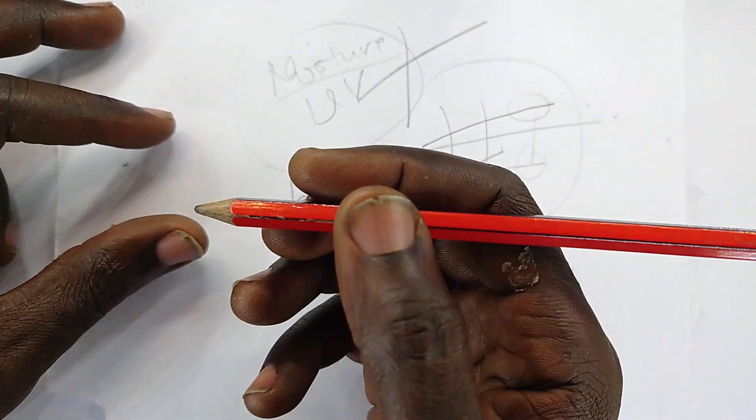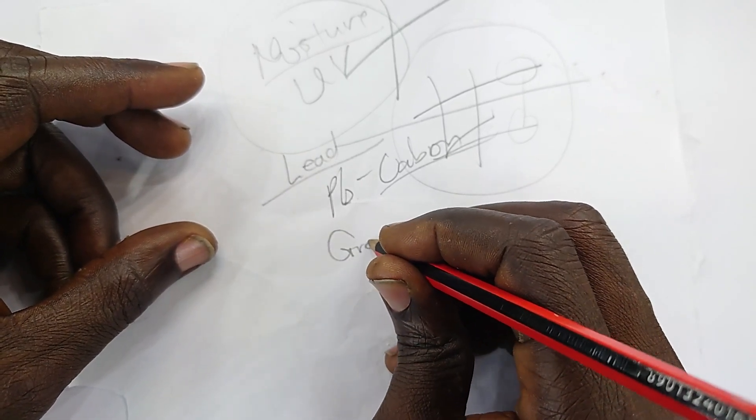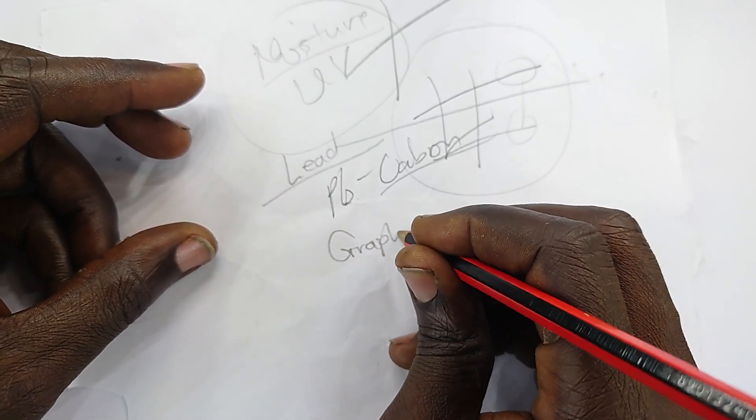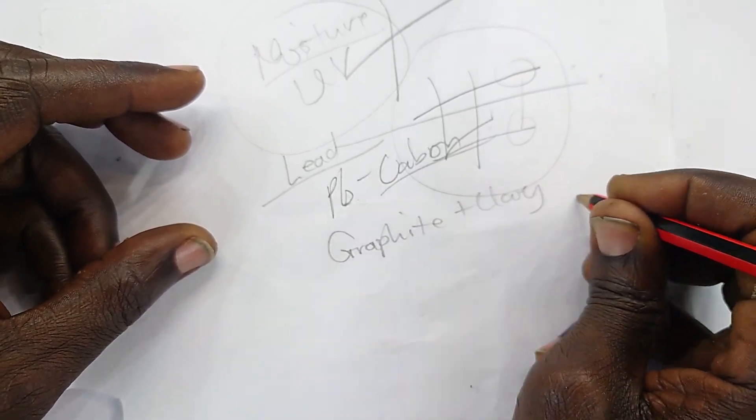But today we actually have that lead made out of graphite which is also carbon and clay which adds as a binder and that's the pencil you have.